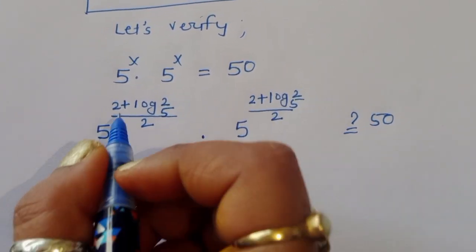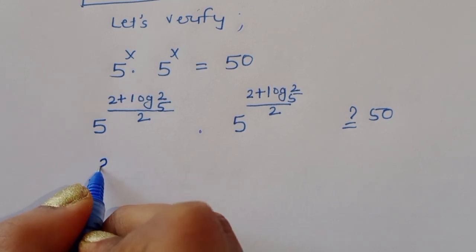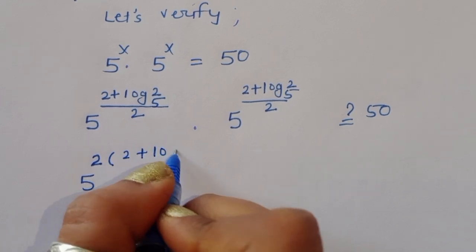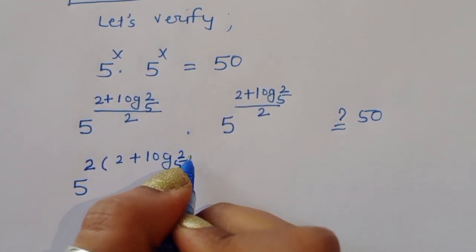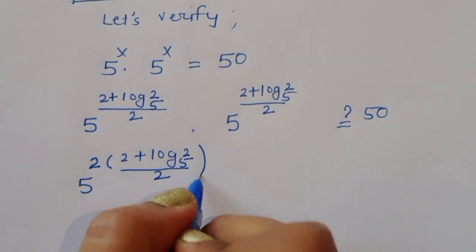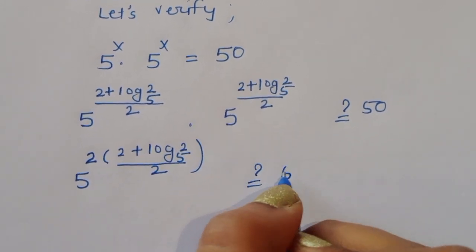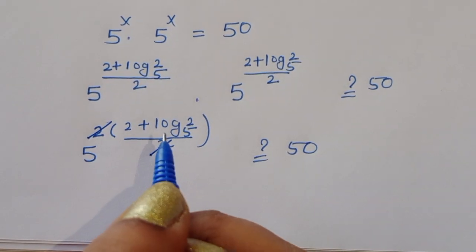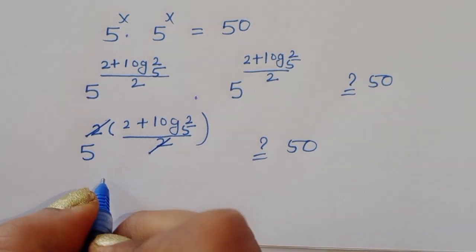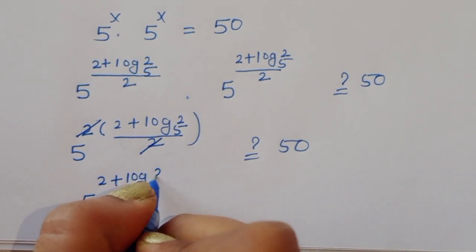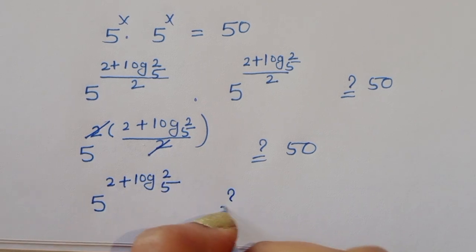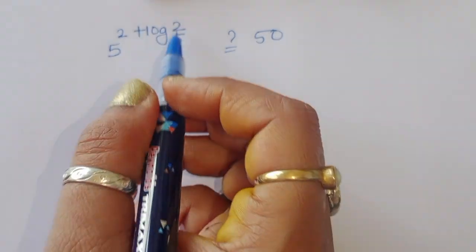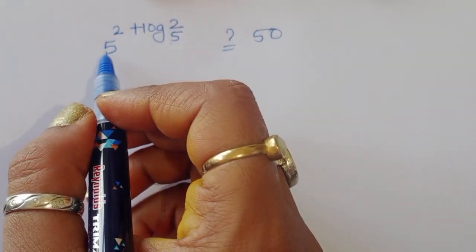We can write this as 5^(2·((2 + log₅2)/2)), which is 5^(2 + log₅2). The 2 in numerator and denominator cancel, giving 5^(2 + log₅2). Does this equal 50?